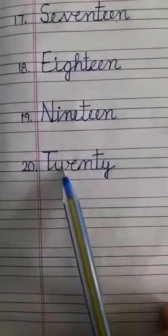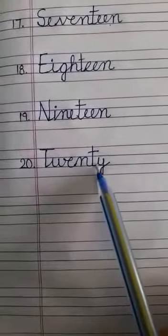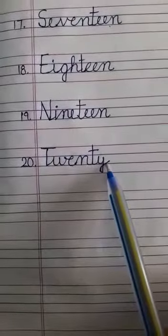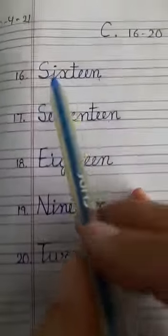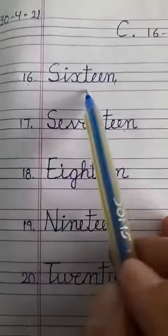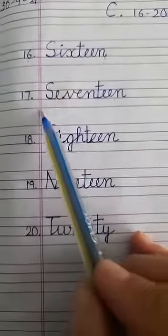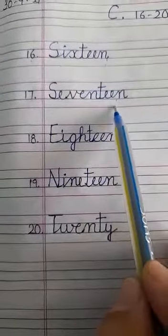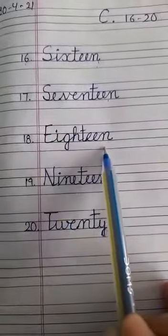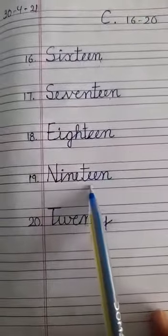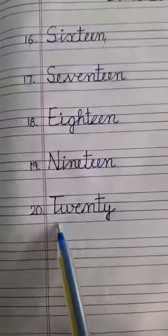T, W, E, N, T, Y — 20. Twenty. 16, 17, 18, 19, 20.